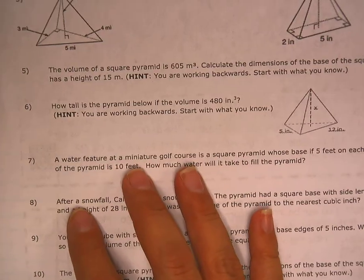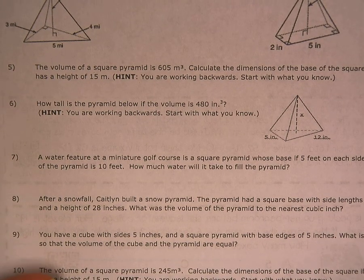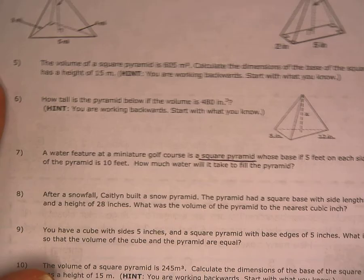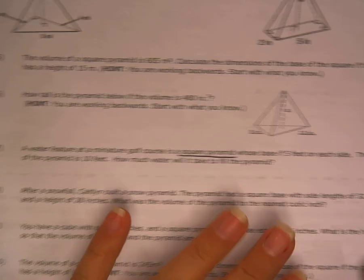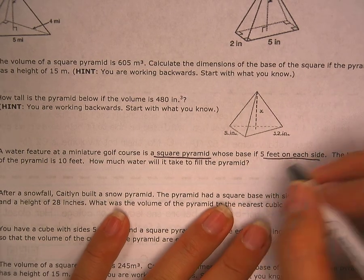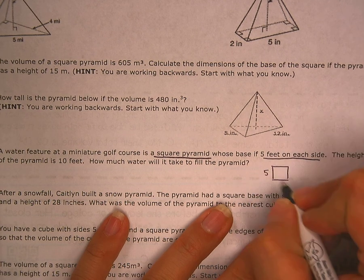So now, look at number 7. It says a water feature at a miniature golf course is a square pyramid. The only thing I care about is a square pyramid. That tells me that I know each side is going to be the same. It said whose base is 5 feet on each side.